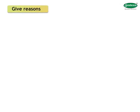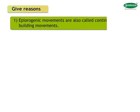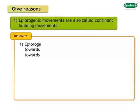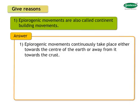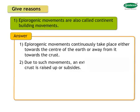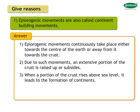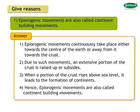Why are epi orogenic movements called continent building movements? Epi orogenic movements continuously take place either towards the center of the earth or away from it towards the crust. Due to such movements, an extensive portion of the crust is raised up or subsides. When a portion of the crust rises above sea level, it leads to the formation of continents. Hence, epi orogenic movements are called continent building movements.